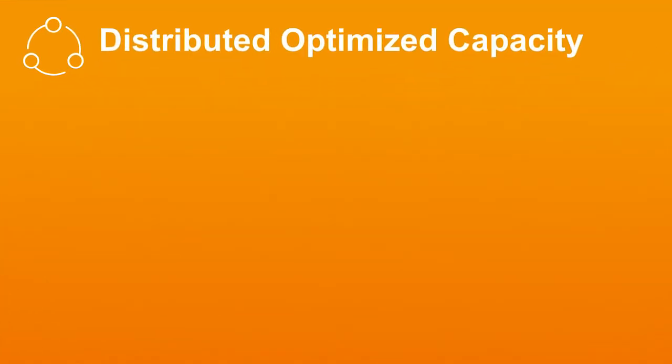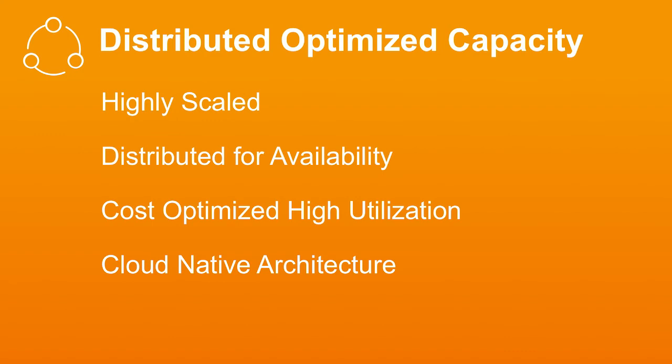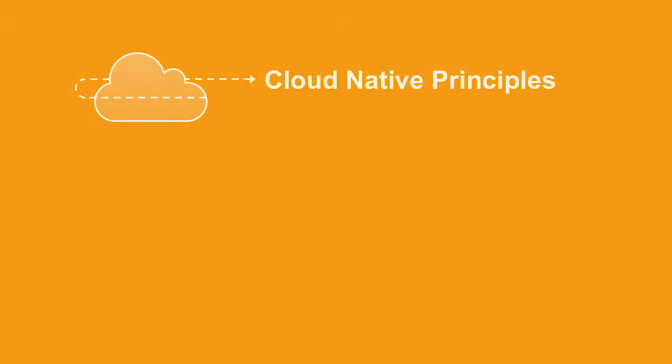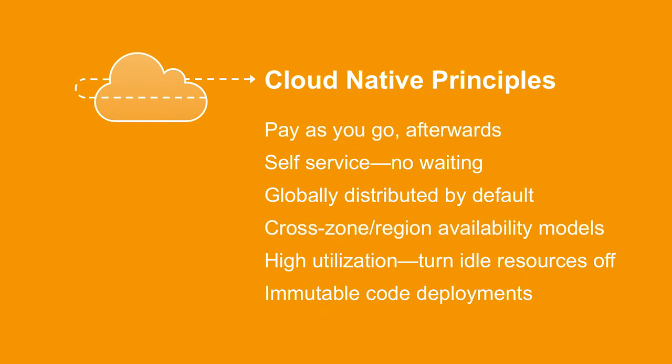Moving on to distributed optimized capacity — highly scaled workloads that are distributed for high availability, cost-optimized for high utilization, and follow a cloud native architecture. The principles of cloud native are: you pay as you go and pay a month in arrears; it's self-service; everything's API-driven and automated — you're not filing tickets and waiting; everything's globally distributed by default with cross-zone and cross-region availability; you turn idle resources off very aggressively; and you do immutable code deployments, containerized or using AMIs to bake your code rather than updating a machine in place.